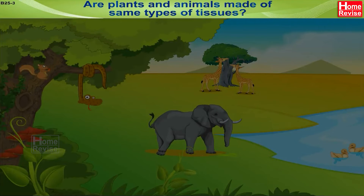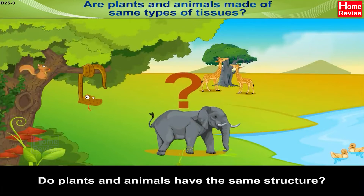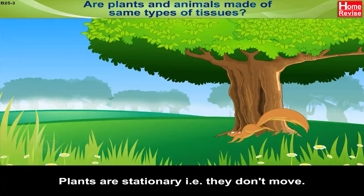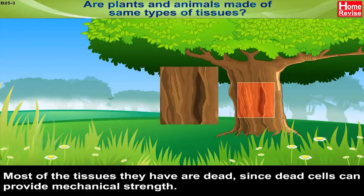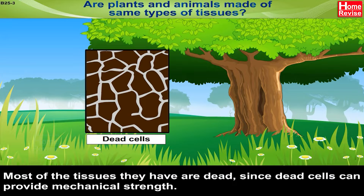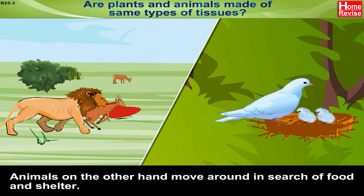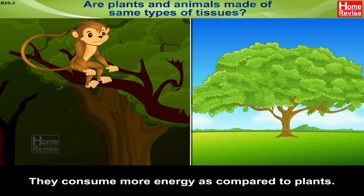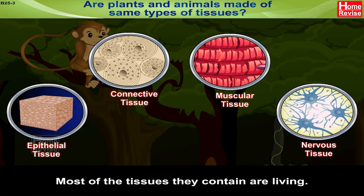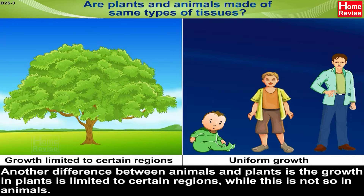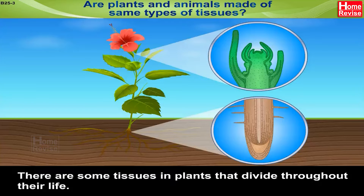Are plants and animals made of the same type of tissues? There are noticeable differences between plants and animals. Plants are stationary — they don't move — because most of the tissues they have are dead, and dead cells can provide mechanical strength. Animals move around in search of food and shelter and consume more energy; most of their tissues are living. Growth in plants is limited to certain regions, while this is not so in animals. Some tissues in plants divide throughout their life.